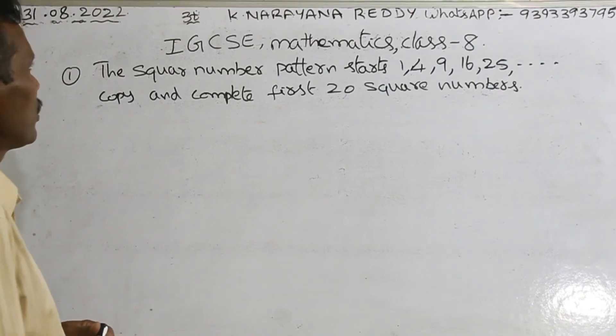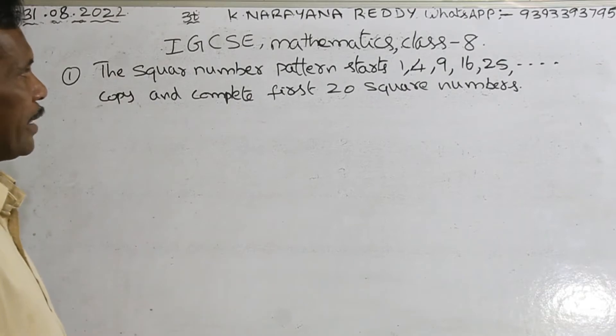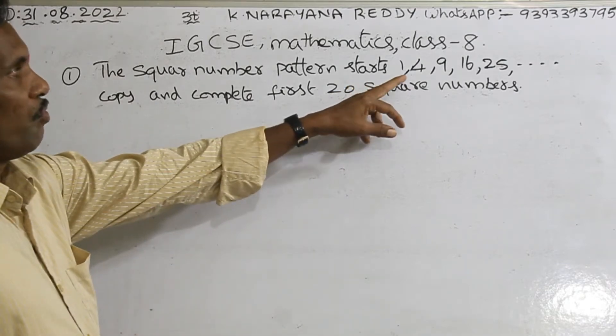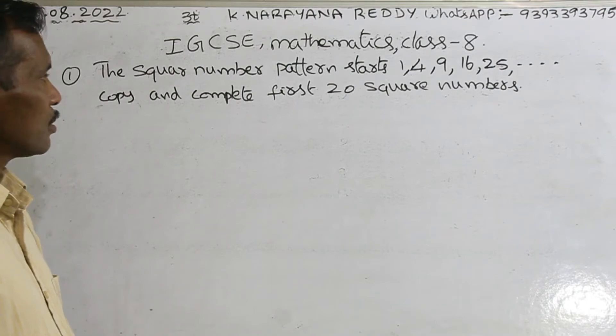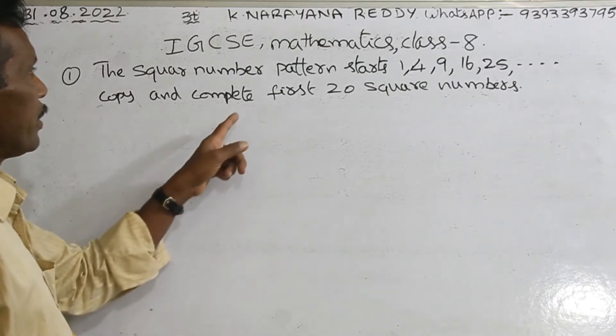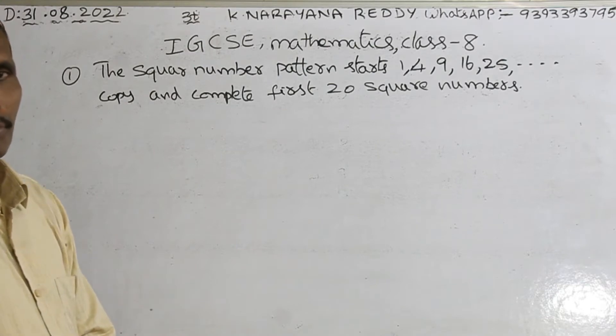Welcome to the channel. The square number pattern starts 1, 4, 9, 16, 25. Means 1 square, 2 square, 3 square, 4 square, 5 square. We need to complete the first 20 square numbers. Means up to 20 you have to write square numbers. Simple.